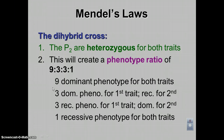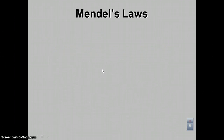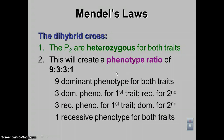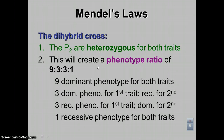The 9:3:3:1 ratio breaks down like this: nine are dominant phenotype for both traits; three are dominant for the first and recessive for the second; another three are recessive for the first and dominant for the second; and one is recessive for both. That adds up to 16 boxes. Remember the three ratios to memorize: 3:1 and 1:2:1 are for monohybrid situations, and 9:3:3:1 occurs in a dihybrid cross when both parents are heterozygous for both traits.